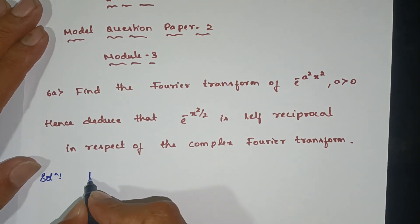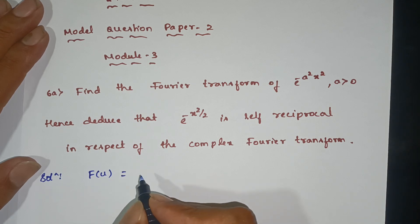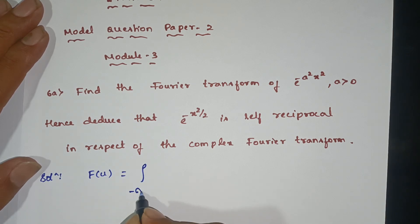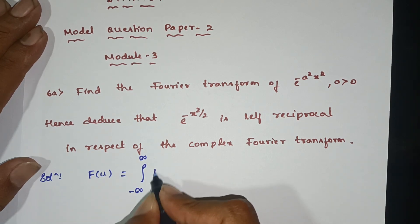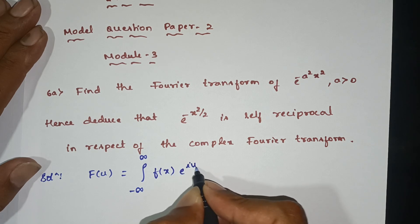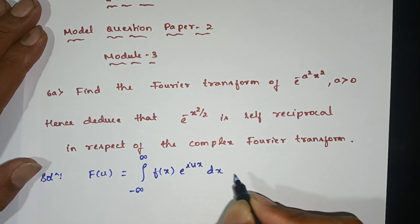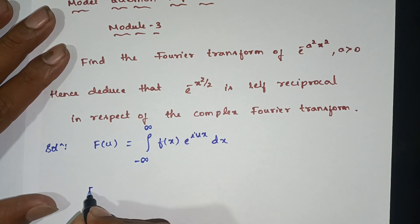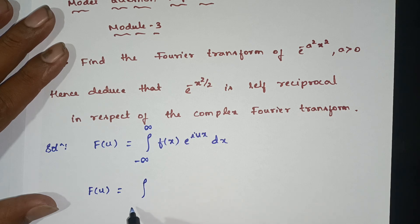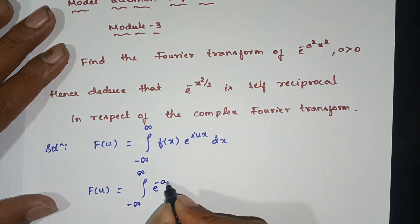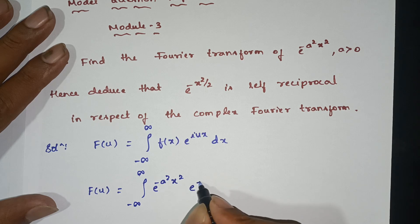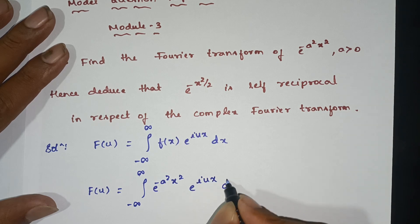Solution: F of u is equal to the formula, integral from minus infinity to plus infinity of f of x times e power iux dx. Here f of x is e power minus a square x square, so F of u equals integral from minus infinity to infinity of e power minus a square x square times e power iux dx.